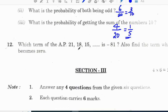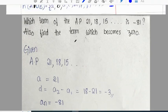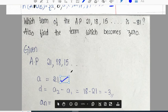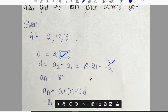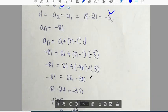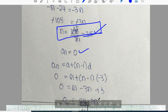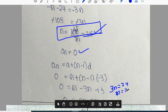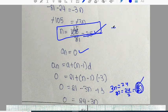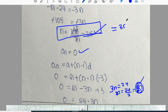Question 12: Which term of AP 21, 18, 15, ... is -81? Also find the term which becomes 0. Given AP is 21, 18, 15, so first term a = 21, common difference d = 18 - 21 = -3, and aₙ = -81. Applying nth term formula: -81 = 21 + (n-1)(-3). Solving: -102 = -3(n-1), so n-1 = 34, n = 35. For aₙ = 0: 0 = 21 + (n-1)(-3), giving 3n = 24, n = 8. The 35th term is -81 and 8th term is 0.